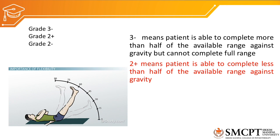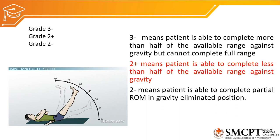Grade 2 minus means the patient is able to complete only a partial range of motion in the gravity-eliminated position, so the patient's joint should be in the horizontal plane for testing. These additional grades — 3 minus, 2 plus, and 2 minus — are important in addition to the basic grades from 0 to 5.